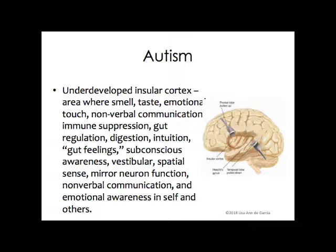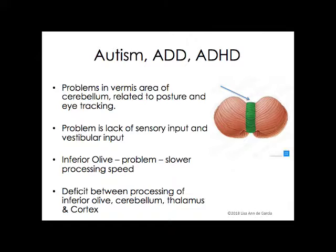What is being said is that there's inflammation in this area of the brain. Also, in autism, ADD, and ADHD, there's a problem in the vermis area of the cerebellum — that strip right in the middle — which seems to be affected in all three conditions. The cerebellum develops from the inside out, so that inner layer develops first, and it controls posture and eye tracking. The problem is that for that part to develop, it needs sensory and vestibular input. Also, the inferior olive, located behind the cerebellum, is affected and that leads to slower processing speed.